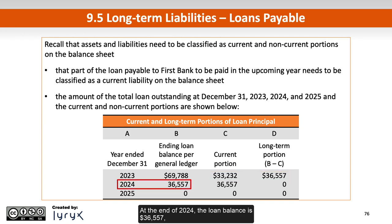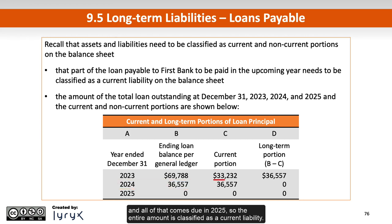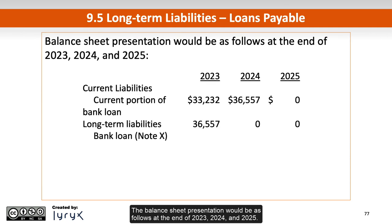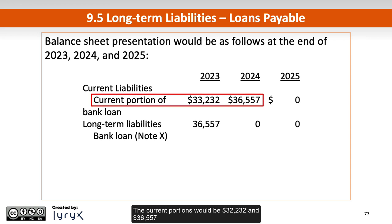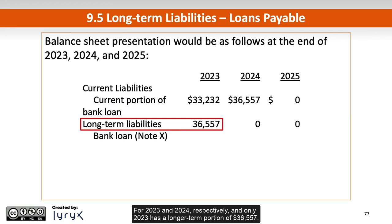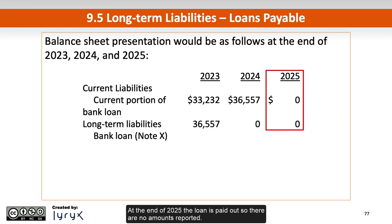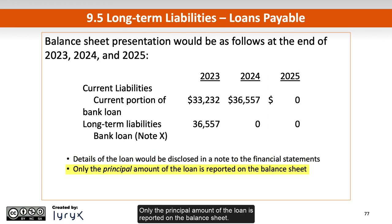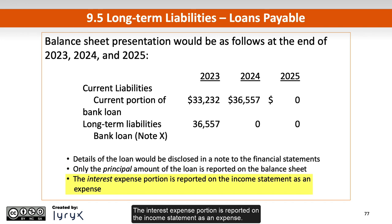At the end of 2024, the loan balance is $36,557, and all of that comes due in 2025, so the entire amount is classified as a current liability. The balance sheet presentation would be as follows at the end of 2023, 2024, and 2025: the current portions would be $33,232 and $36,557 for 2023 and 2024 respectively, and only 2023 has a longer-term portion of $36,557. At the end of 2025, the loan is paid out, so there are no amounts reported. Details of the loan would be disclosed in a note to the financial statements. Only the principal amount of the loan is reported on the balance sheet; the interest expense portion is reported on the income statement as an expense.